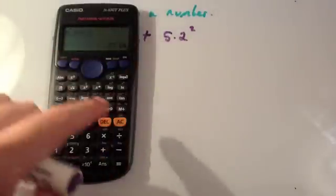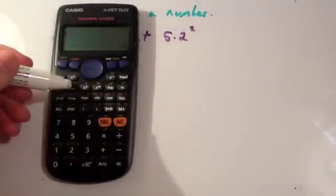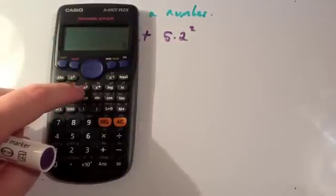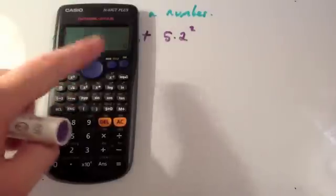Alternatively, you could use the squared button. The squared button on your calculator is this one here. See here, X with little 2 above it. So there's your squared button, if you're using a Casio.